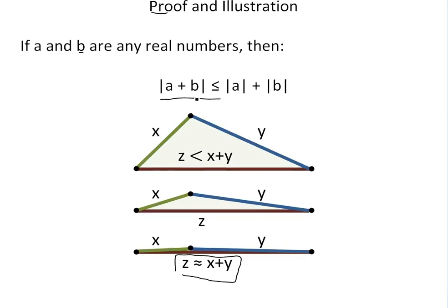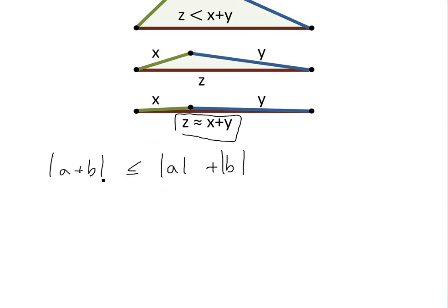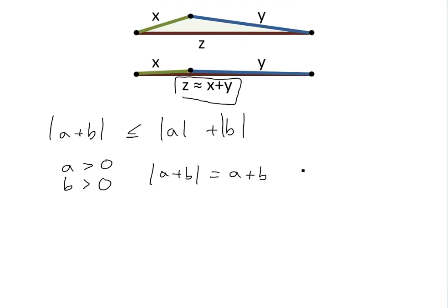We can also see this algebraically. If A is greater than zero and B is greater than zero, then the absolute value of A plus B just equals A plus B, because they're both positive. And the absolute value of A plus the absolute value of B also equals A plus B. So when both are greater than zero, it's easy to see why the inequality is true.